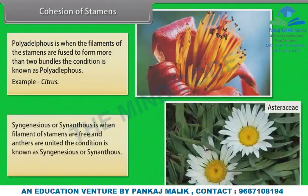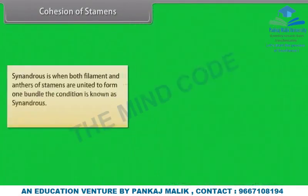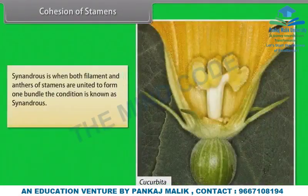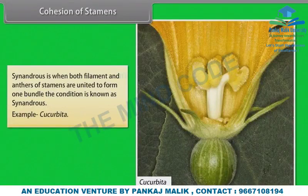Syngenecious or Synanthous is when filaments of stamens are free and anthers are united, example Asteraceae. Synandrous is when both filaments and anthers of stamens are united to form one bundle, example Cucurbita.